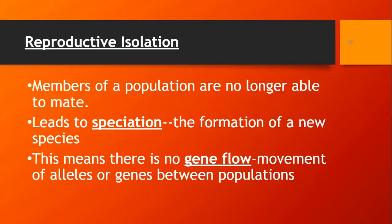Reproductive isolation is when members of a population can't mate. There are many different reasons for that, which we'll talk about. But this leads to speciation — the formation of a new species. This is because of reproductive isolation, meaning they are isolated from one another and cannot sexually reproduce for one reason or another.